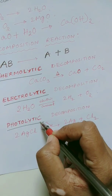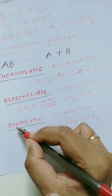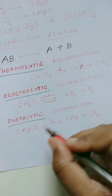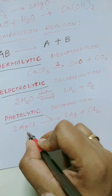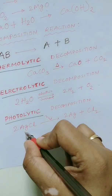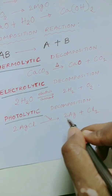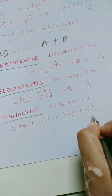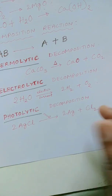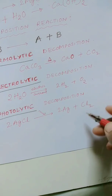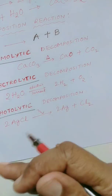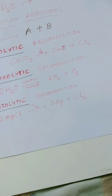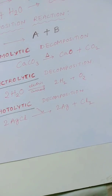And if the breakdown is mainly done by photo — photo means light — so if the breakdown is happening because of light, it is called photolytic decomposition. One best example is that of silver chloride. Silver chloride, if you expose it to sunlight, it breaks down into silver metal and chlorine gas. This was mainly used in black and white photography in the olden days; the photographic film was coated with AgCl, silver chloride, which was then exposed to sunlight, decomposed, and gave the black and white image.